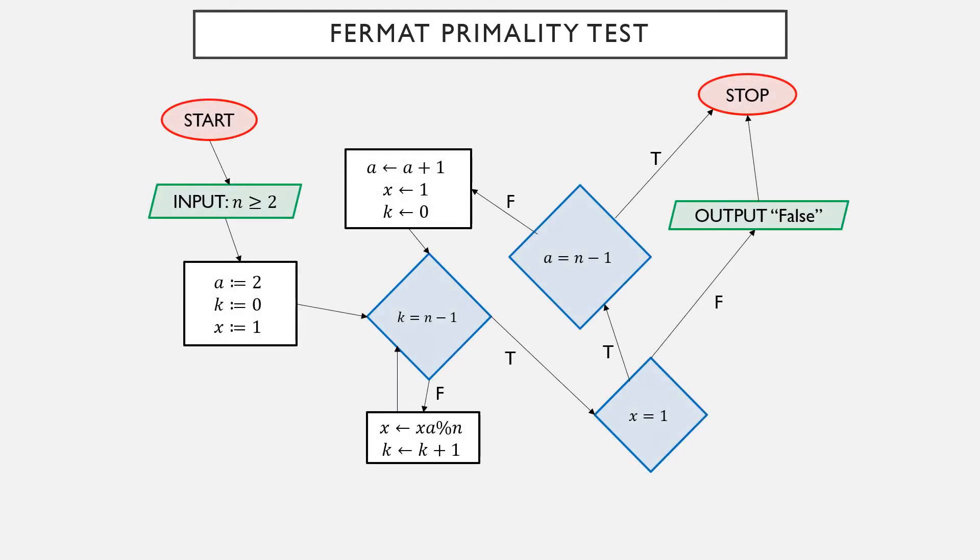So here's what's called the Fermat primality test. Here's a flowchart algorithm for it, and let's try to understand what it does. We start and input some number n, the number that we're going to try to determine if it's prime. So here, a is taken to be 2, k is 0, x is 1. At all steps, x is going to be equivalent to a to the k mod n. So notice that 2 to the 0 is equivalent to 1 mod n, so we do start out there.